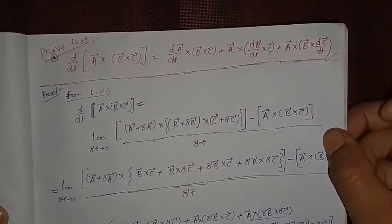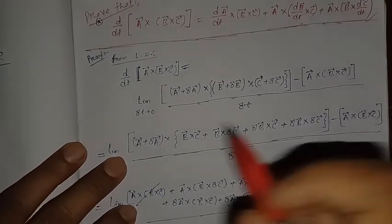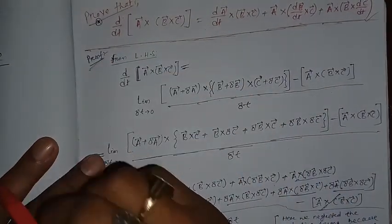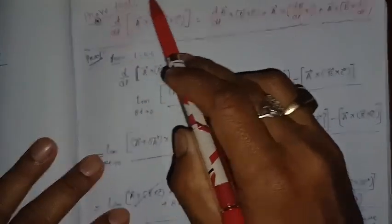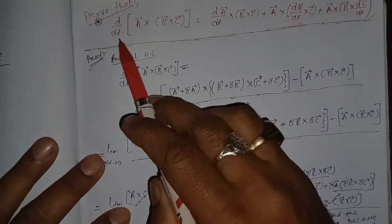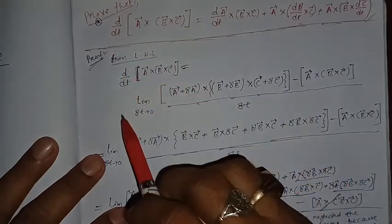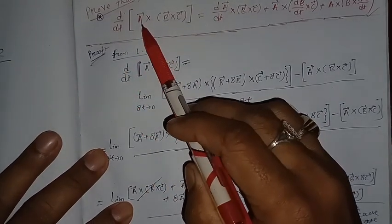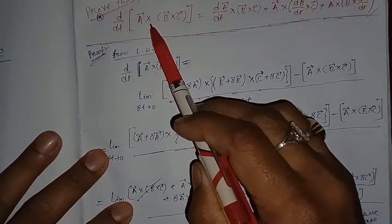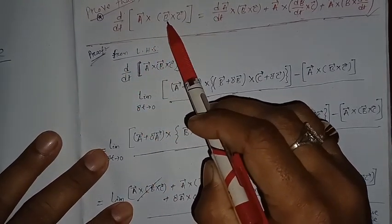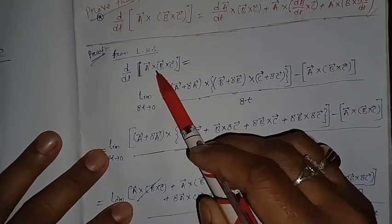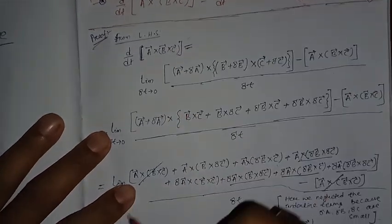The proof starts here. From the LHS we are going to start. The LHS is given as d/dt of (a vector × b vector × c vector), that is a × b × c.